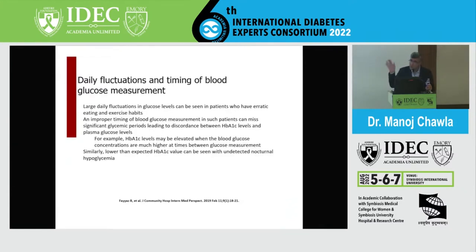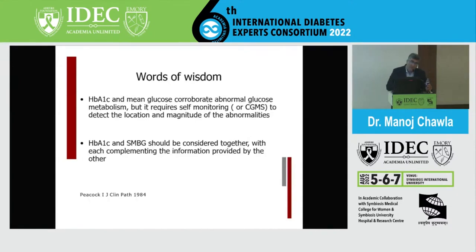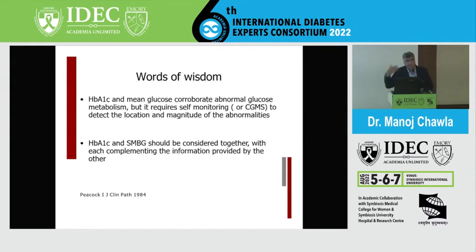There are daily sugar fluctuations, and patients with the same HbA1C may have very different glucose profiles. Peacock stated as far back as 1984 that HbA1C and mean glucose corroborate abnormal glucose metabolism, but self-monitoring is required to detect the location and magnitude of abnormalities. Today, HbA1C, SMBG, and CGM should all be considered together to obtain complete clinical information.